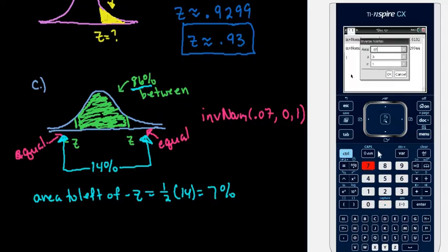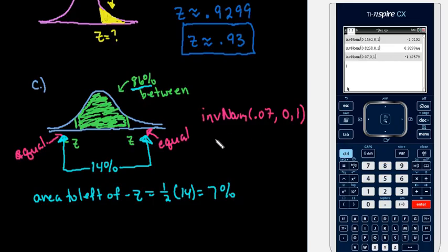And we would just type in the .07 for the area. And this will give us the negative z-score. Since it's looking for both the negative and the positive, we would just write down both of them.